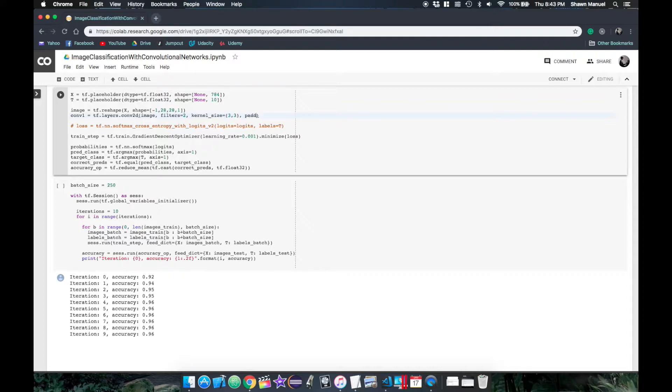The conv2d function also gives us the option to zero-pad the input so that the output has the same height and width which involves setting a padding parameter to the string same. The default of this option is to have no padding which is the same as setting the padding to valid. Then we can pass an activation function to apply to the output of the layer.